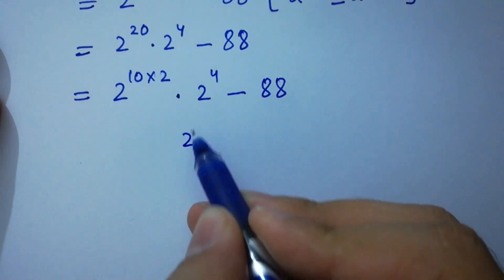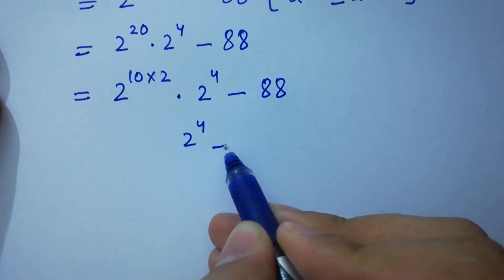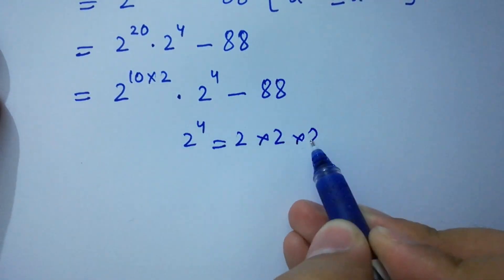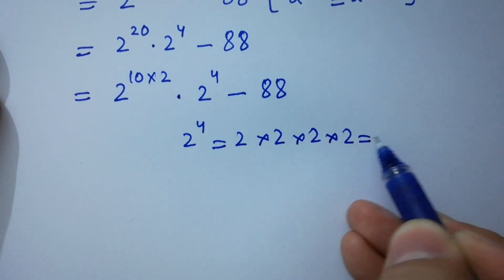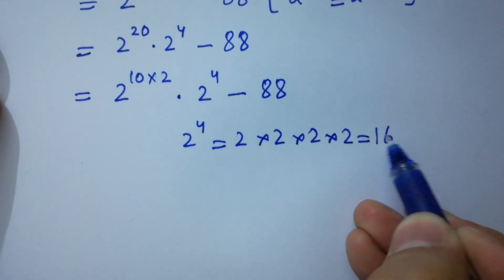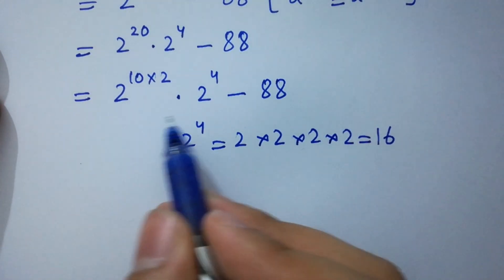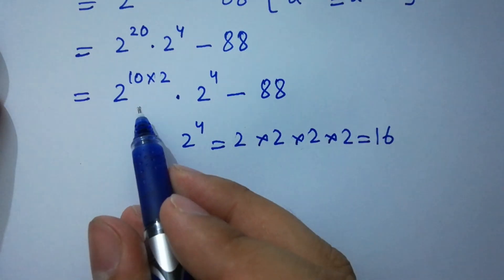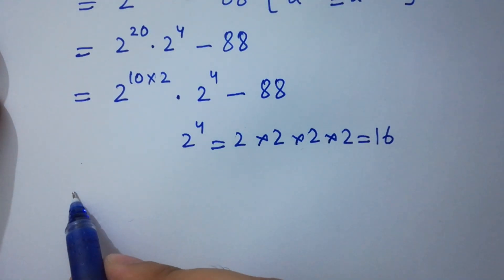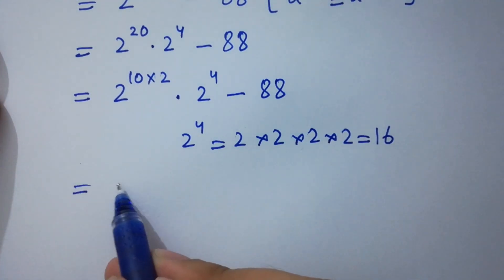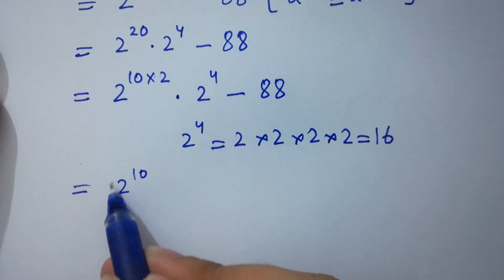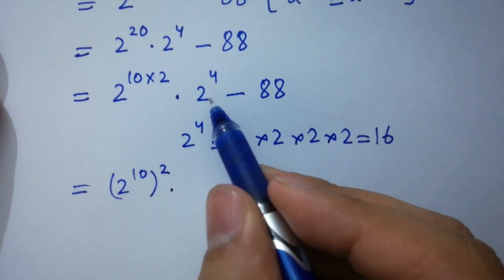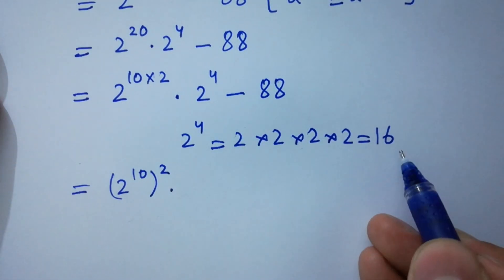Now, 2 to the power 4 equals 2 times 2 times 2 times 2, which is 16. So we have (2^10) squared times 16, minus 88.